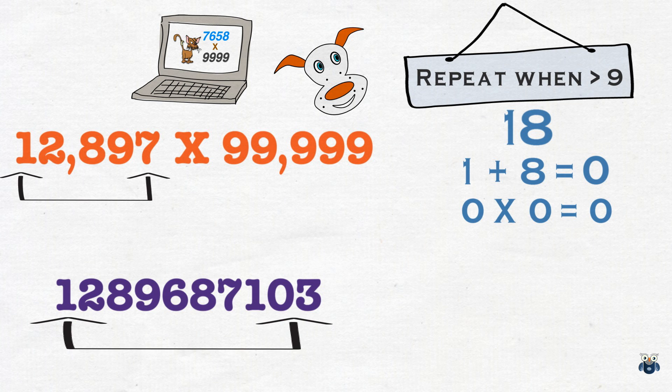Now, let's look at our answer, which is 1,289,687,103. I am going to add the digits and ignore all 9s.